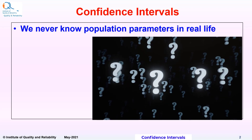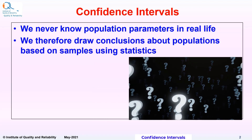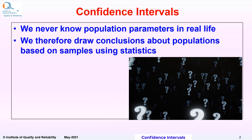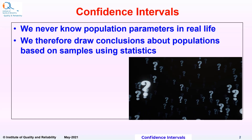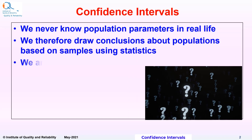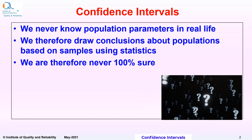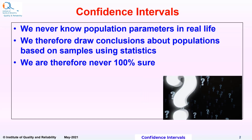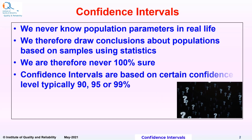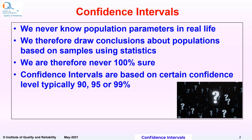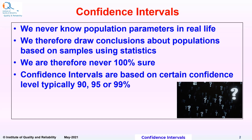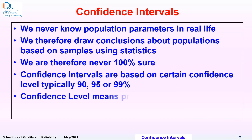We never know population parameters in real life. We therefore draw conclusions about populations based on samples using some statistics. We are therefore never 100% sure about our decisions. Confidence intervals are based on certain confidence levels, typically 90, 95, or 99%. Confidence level means nothing but probability.